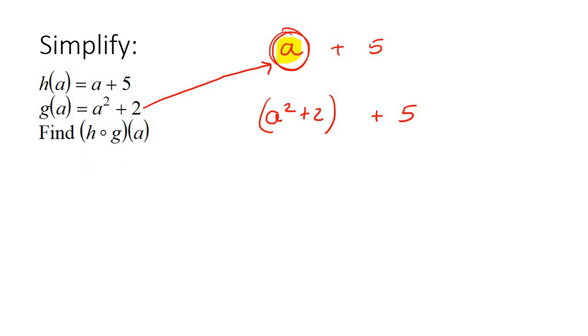I know it might be a bit weird right now, but we're going to practice quite a lot of these in this lesson. So that's going to give you a squared plus 2 plus 5, which is a squared plus 7. And that's your final answer. So you can then just say h dot g with an a is equal to that.